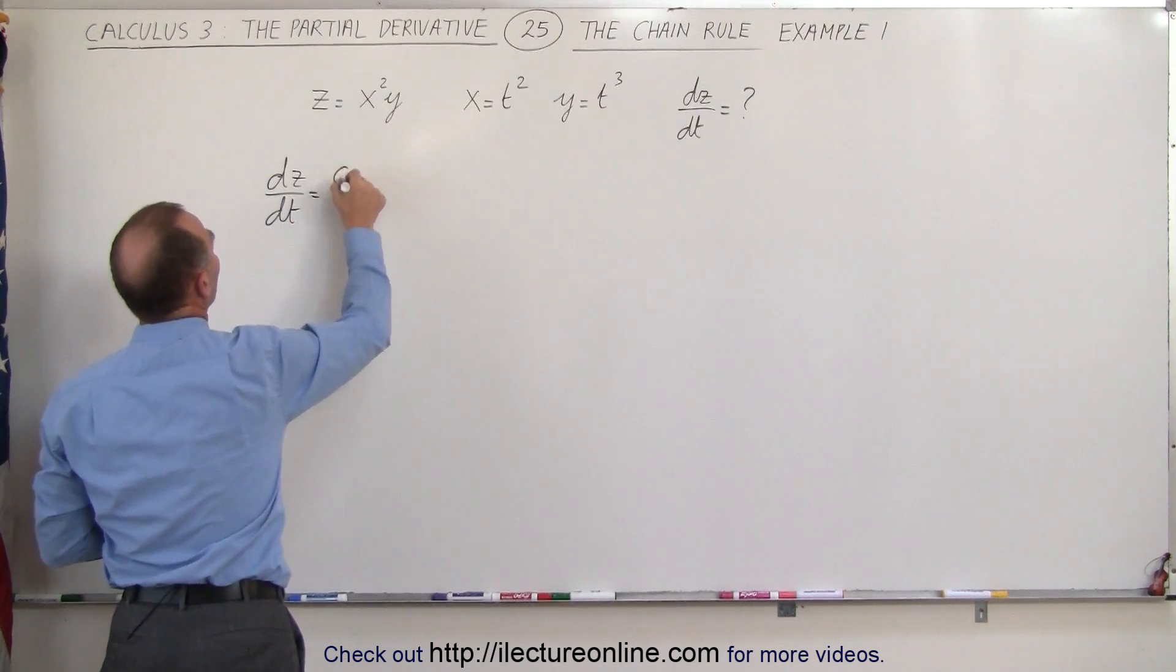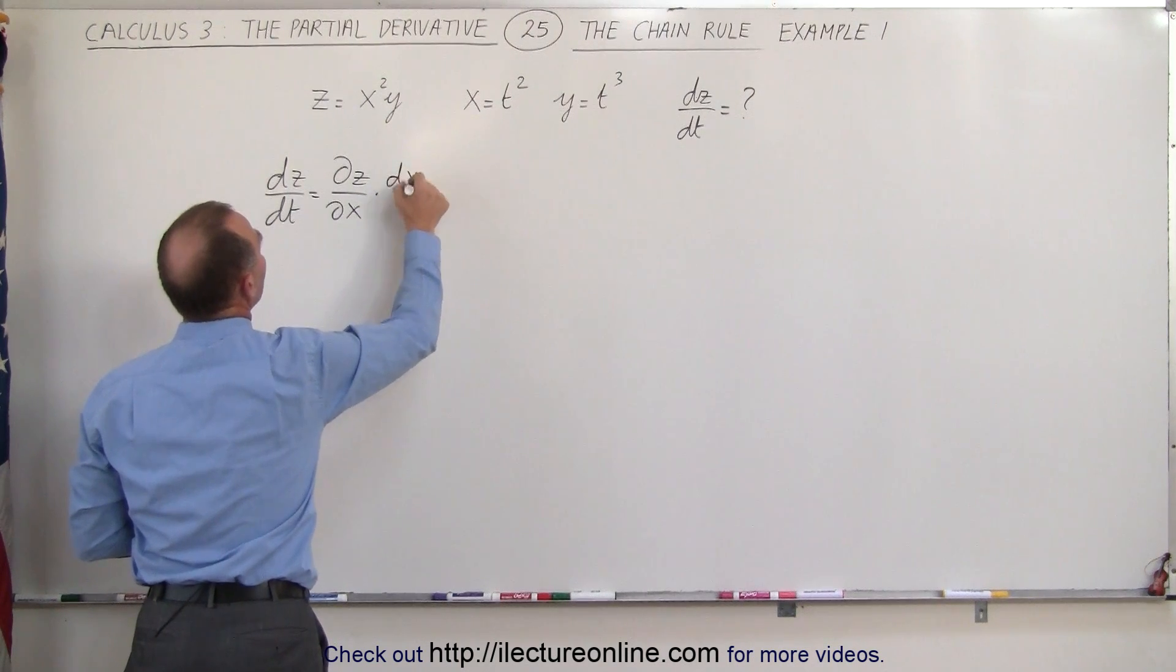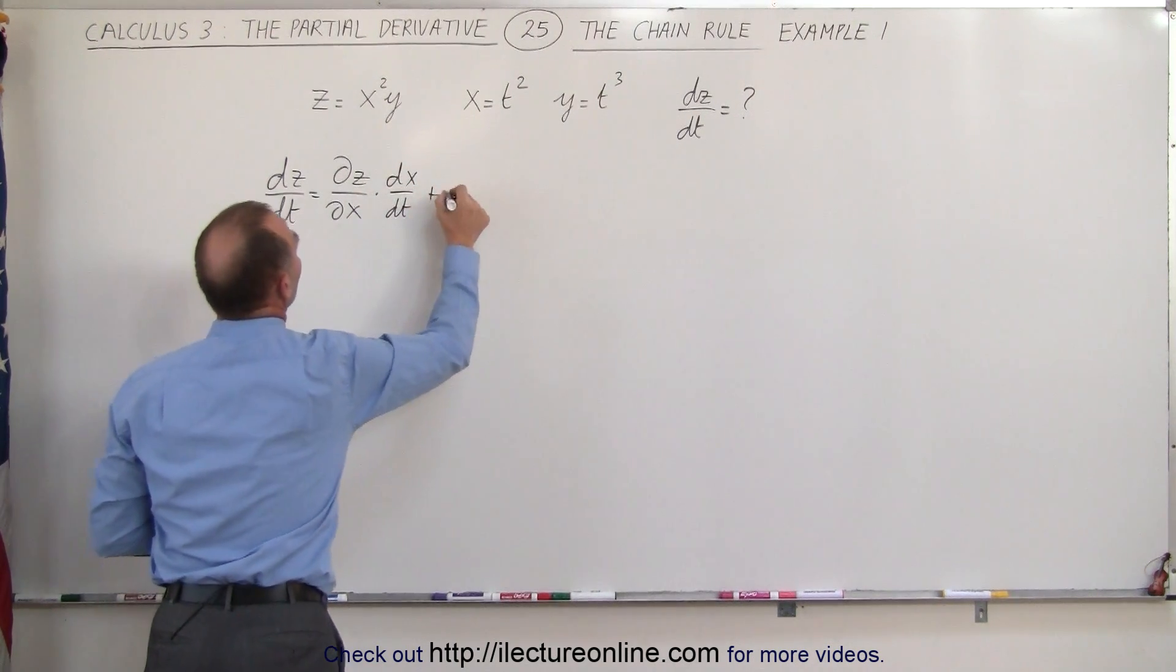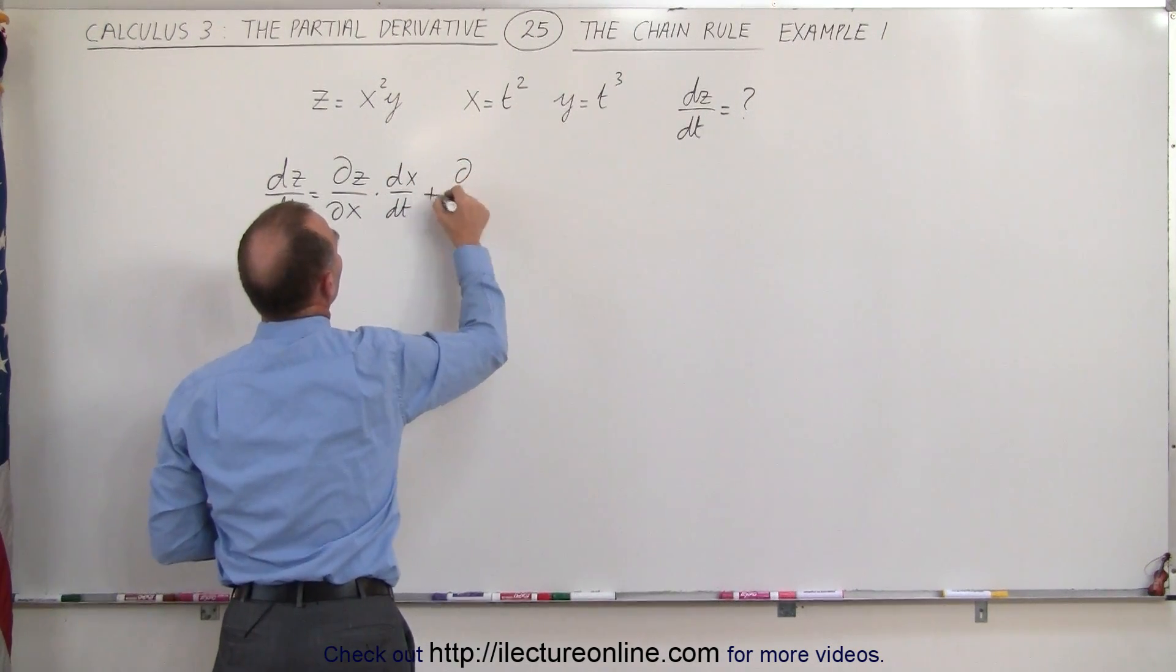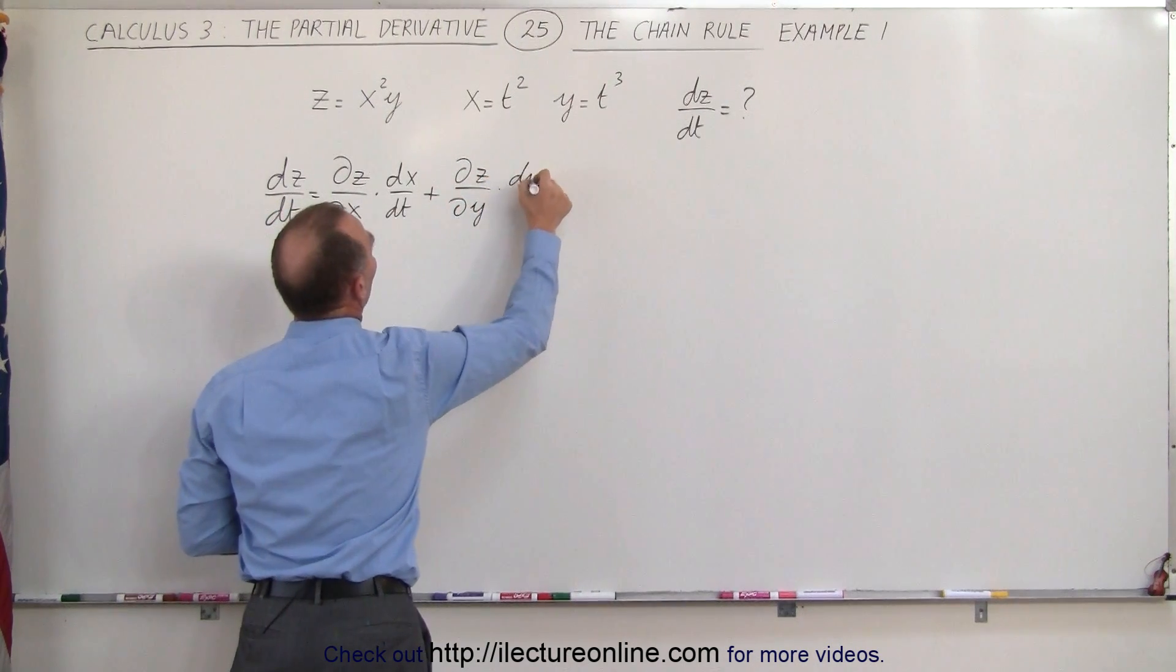is equal to the partial derivative of z with respect to x times dx dt plus the partial derivative of z with respect to y times dy dt.